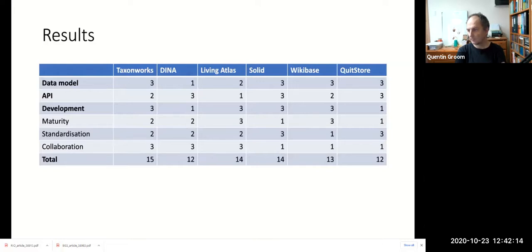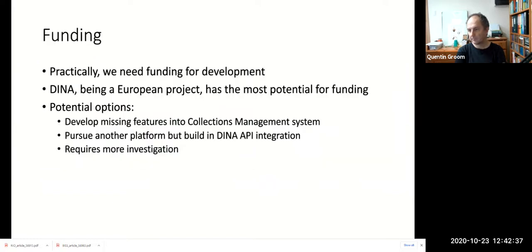Of the three remaining platforms, TaxonWorks is the only one where no criteria completely fails to be met, and it also has the highest total overall score. It's important to note, however, that these results only indicate how well each platform fits our specific requirements for Scratch Pads, and say nothing about the wider quality or viability of these platforms in general or for other use cases.